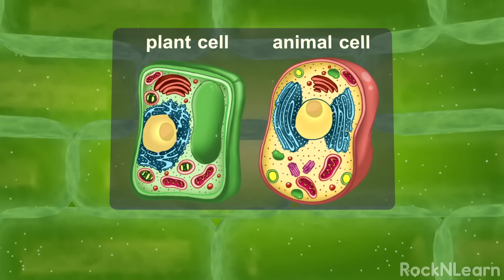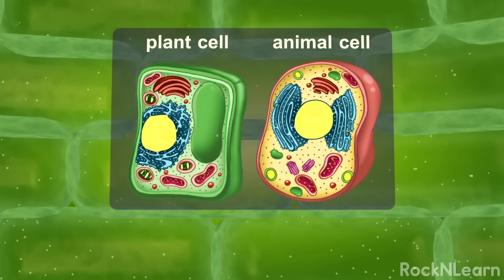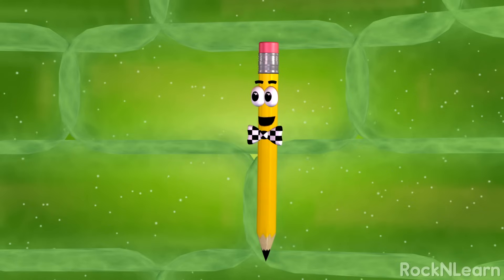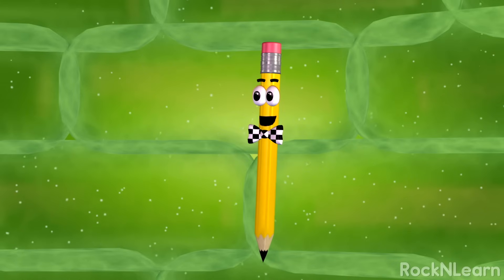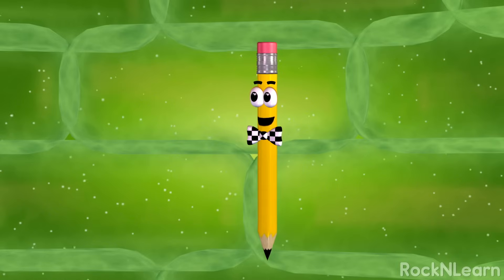The nucleus contains all the information for running the cell and making new cells. The nucleus is kind of like the control center. Every cell in an organism with a nucleus has the same genetic material, or DNA.